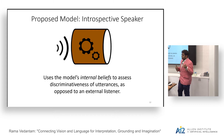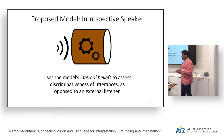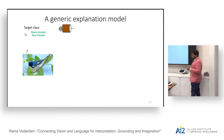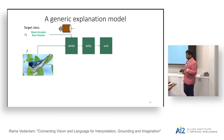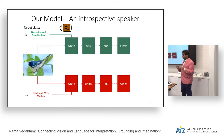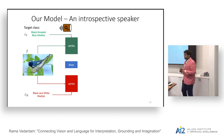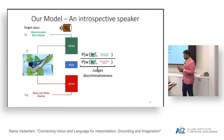While a generic explanation model might take as input an image and a class and say something like 'white belly and breast,' our model also considers what happens if you conditioned on the distractor class, which might say 'white stripes on wings.' At the first time step, you notice you are saying 'white' regardless of whether you conditioned on the target or the distractor. So maybe at this time step the better thing to say is 'blue,' which you pick by finding a word highly likely under the target class and less likely under the distractor class.